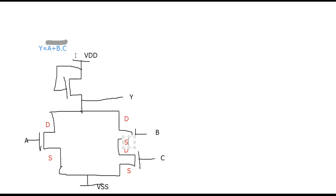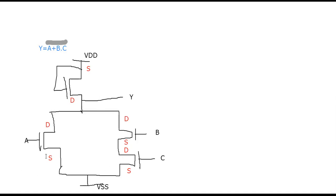For this transistor, VDD is connected to source, so this will be the drain. Now, A and C transistors share the source in common. The B and C transistors share the source and drain. As we know, source and drain are interchangeable. A and B transistors share the drain.